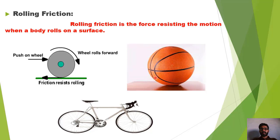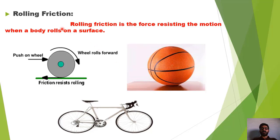ایک basketball ہے۔ جب ہم اس کو push کریں گے یہ اس surface کی اوپر roll کرتا ہوا آگے move کرے گا۔ اس کی motion کو oppose کرنے کے لیے opposite direction میں ایک force produce ہوتی ہے جسے friction کا نام دیتے ہیں۔ چونکہ یہ ball roll کرتے ہوئے آگے جا رہی ہے تو جو force اس کی motion کو oppose کر رہی ہے اس کو نام دیتے ہیں rolling friction کا۔ Cycle کے دو wheels ہیں، جب ہم اس کو آگے move کرواتے ہیں اس کے دونوں wheels roll کرتے ہوئے آگے بڑھتے ہیں تو ان دونوں wheels پہ جو friction کی force لگے گی اس کو ہم نام دیں گے rolling friction کا۔